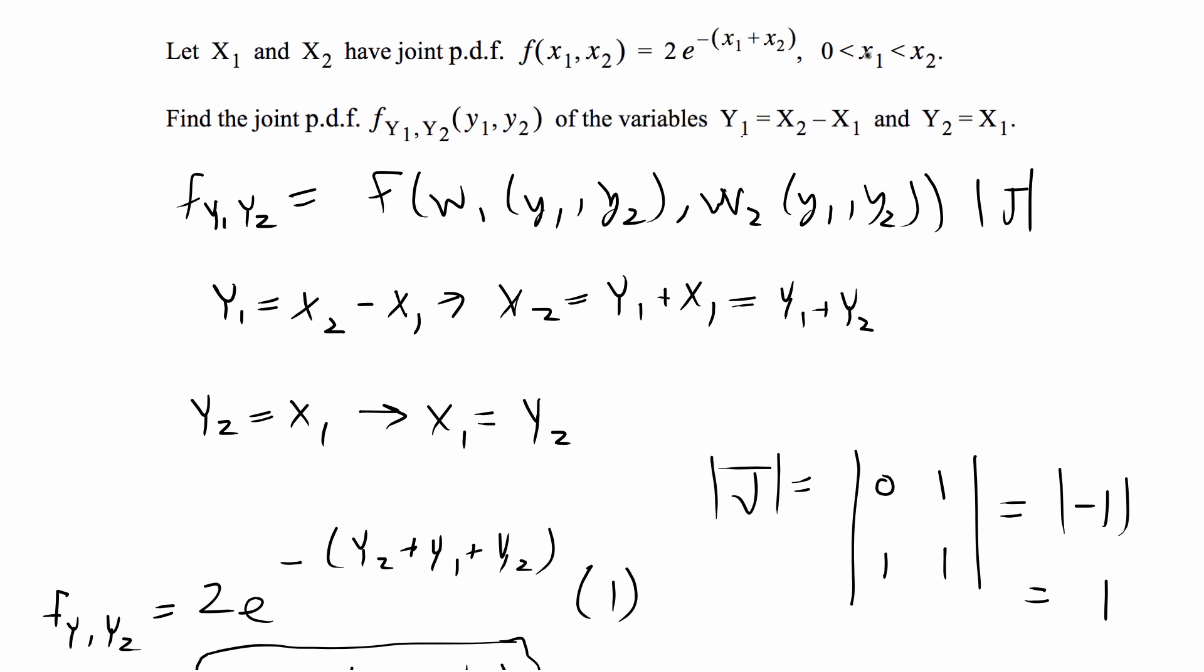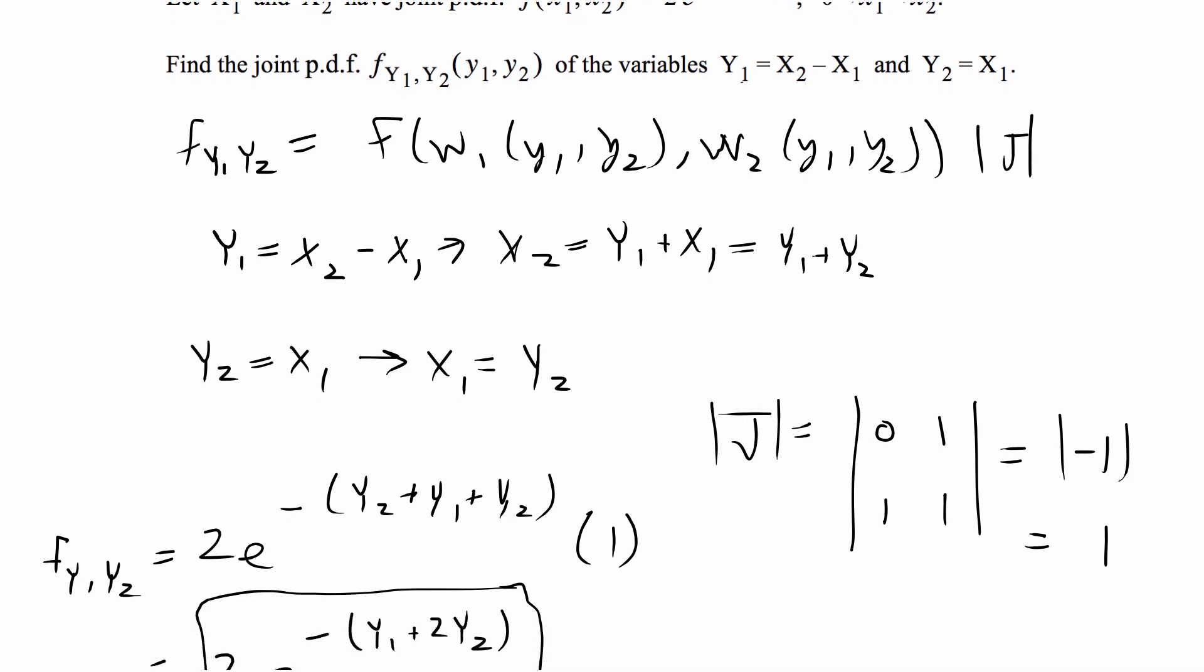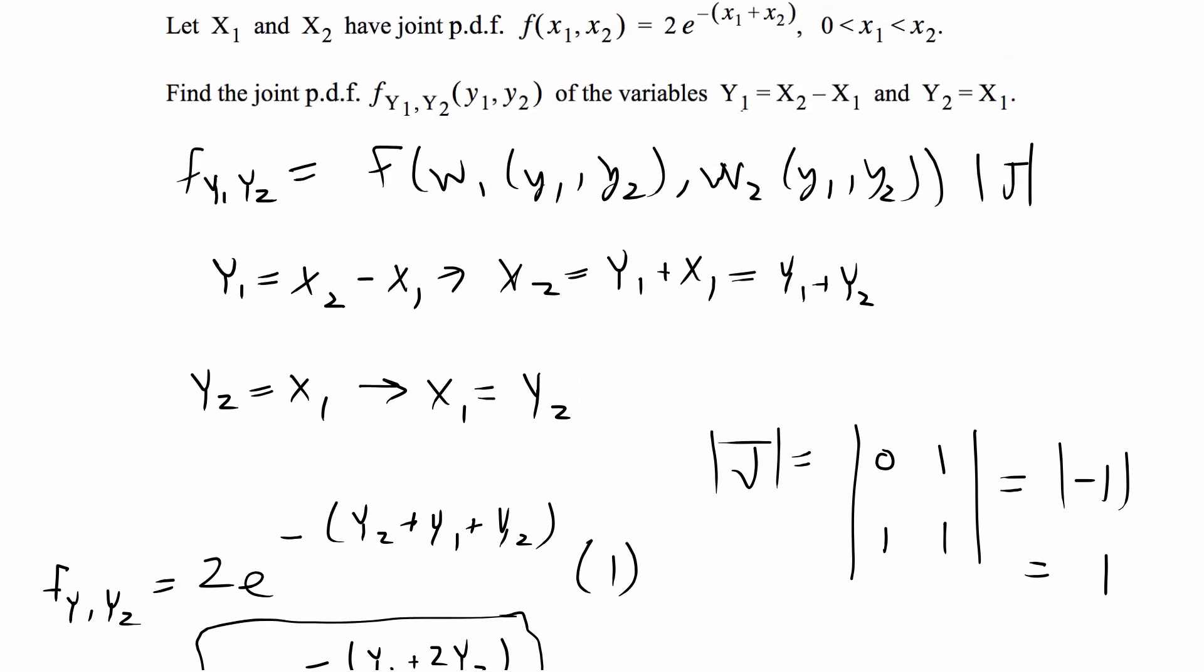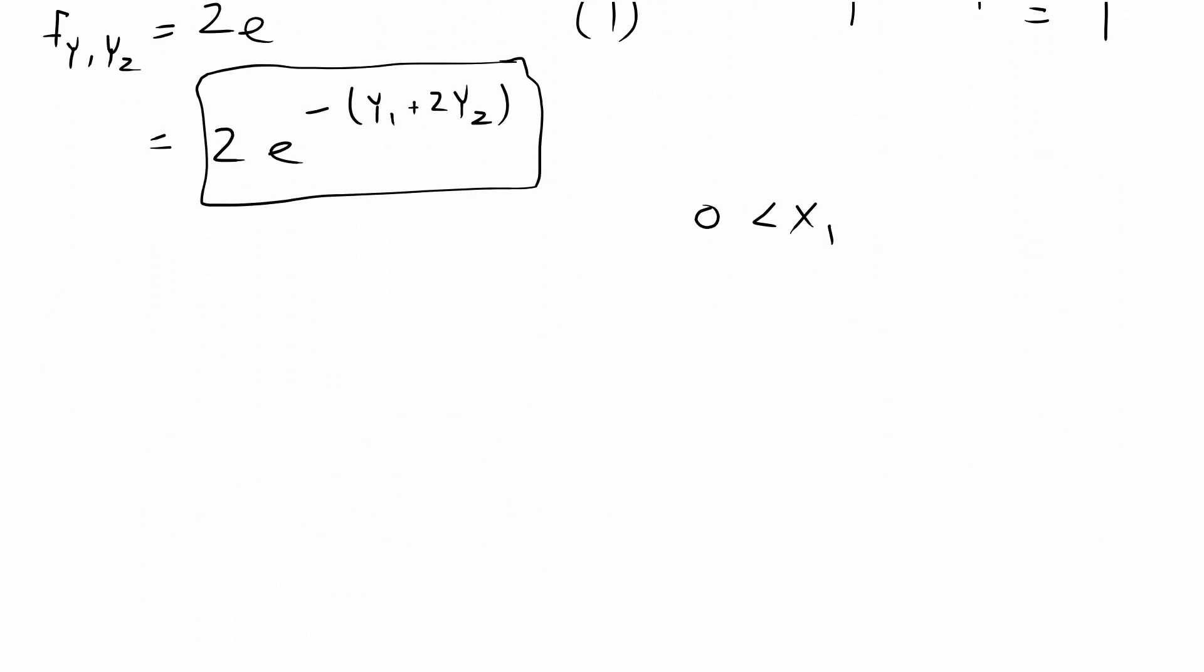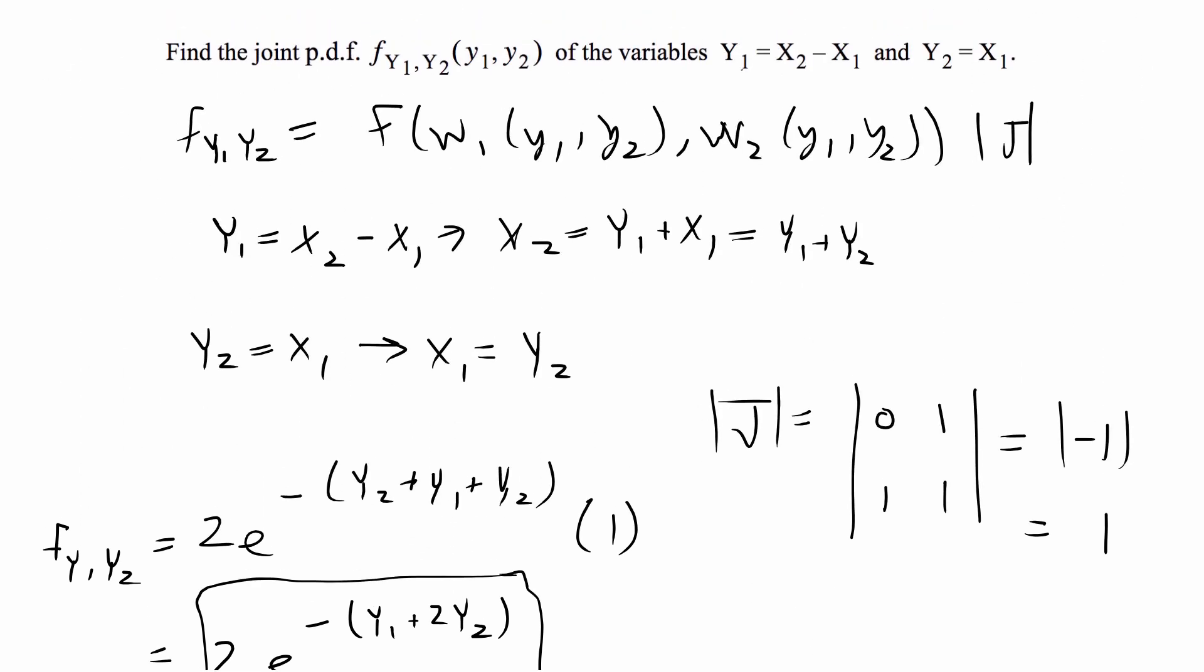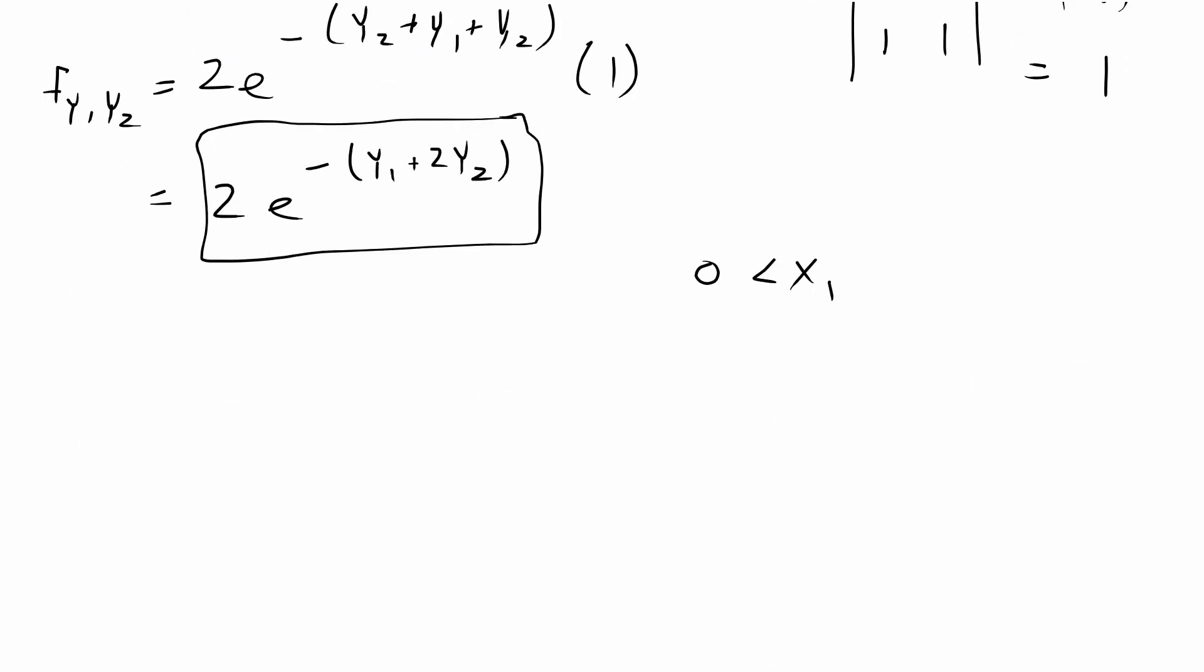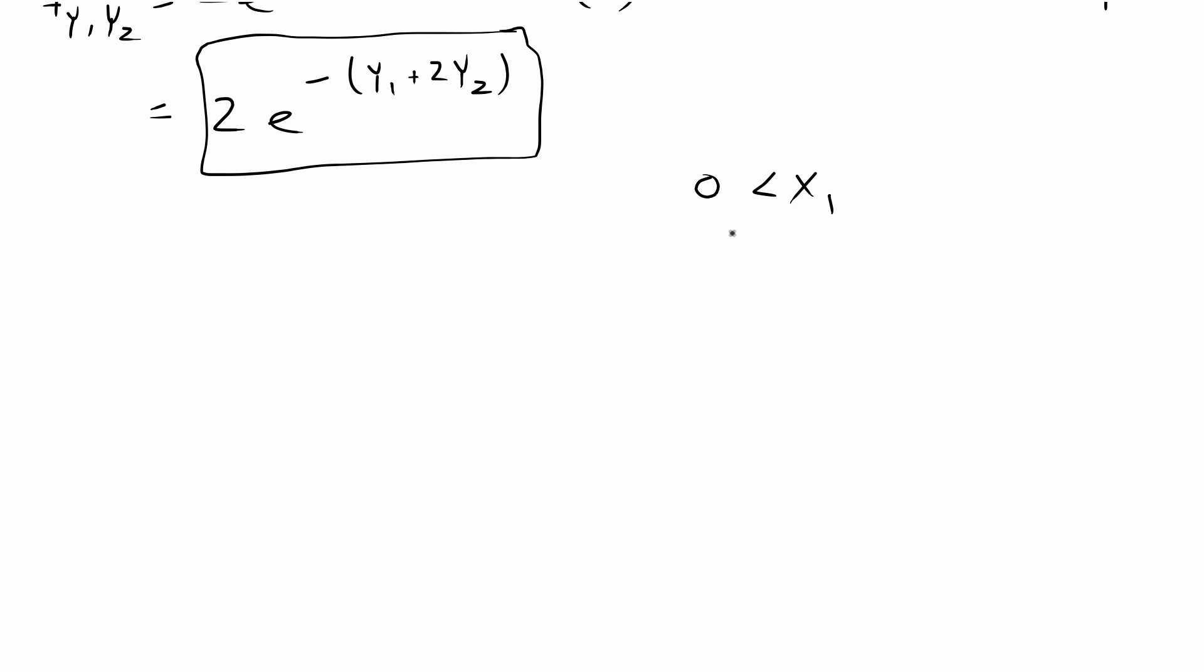We have the ranges for x1 and x2, and now let's convert that to the new ranges for y1 and y2. The way we do that is we break up what we're given and solve for y1 and y2. We have 0 < x1 < x2.